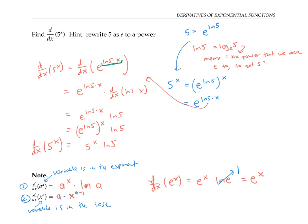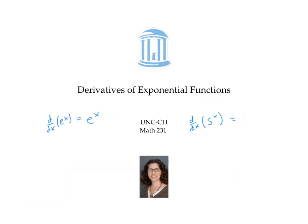So it's important to pay attention to where the variable is when taking a derivative. In this video, we found that the derivative with respect to x of five to the x is ln five times five to the x. And in general, the derivative with respect to x of a to the x is ln a times a to the x — giving us a general formula for the derivative of exponential functions.